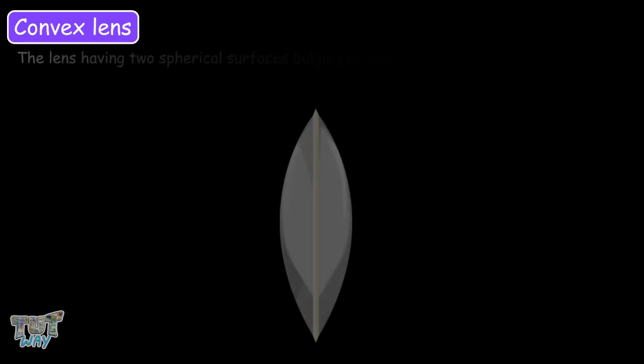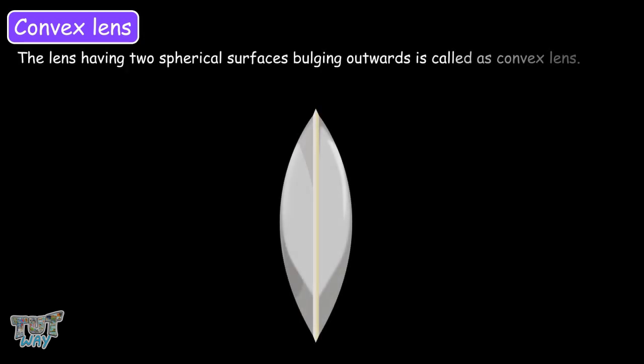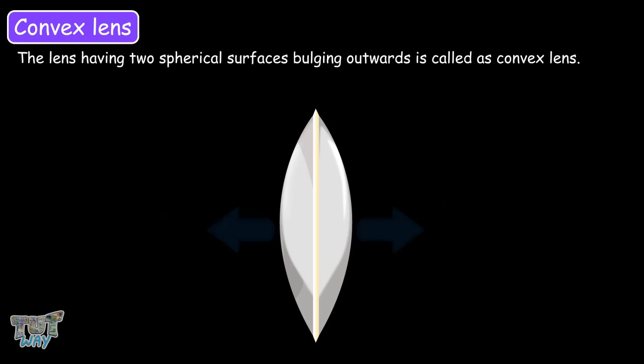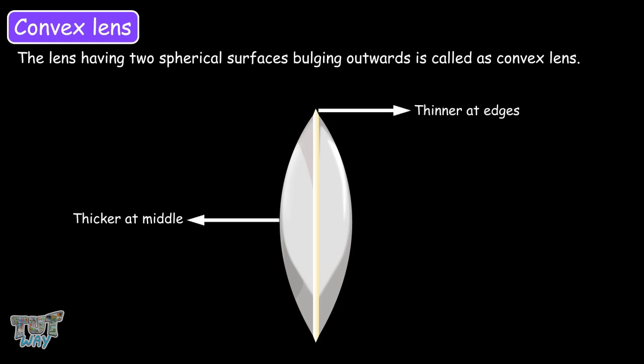We learnt that the lens has two spherical surfaces bulging outwards and this is called a convex lens. It is thicker in the middle when compared to the edges. We also learnt some terms related to the convex lens.